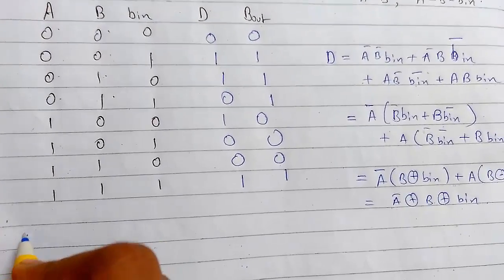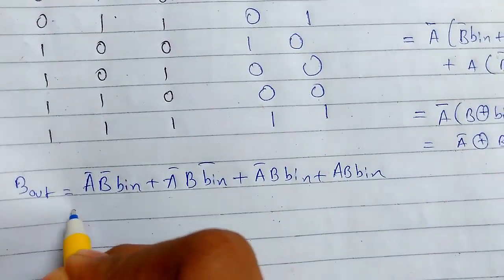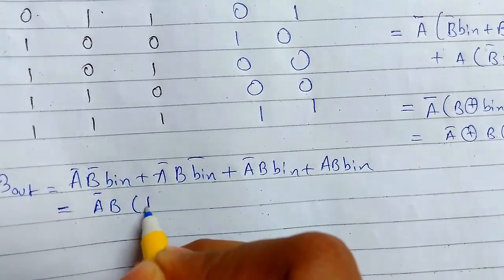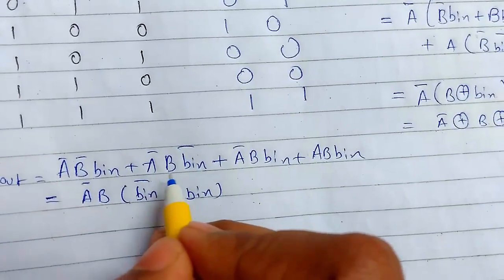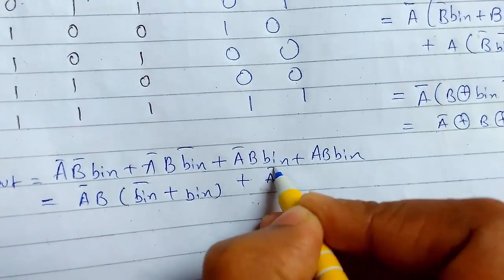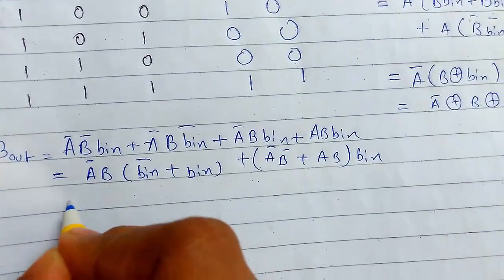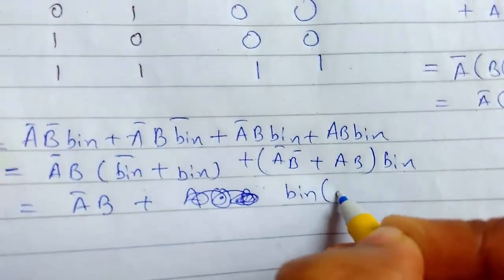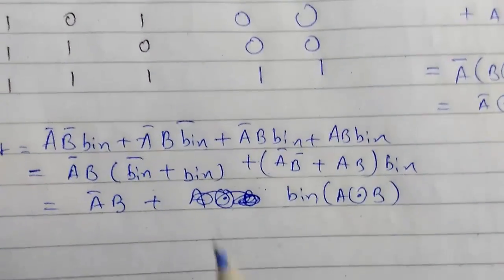Now we will see the expression for borrow out. Again, I will write this. I have written the expression from here. I will try to simplify this. I hope you are getting it. I am taking this common from here. And this will be... So the final expression will be something like this. This is the final expression.